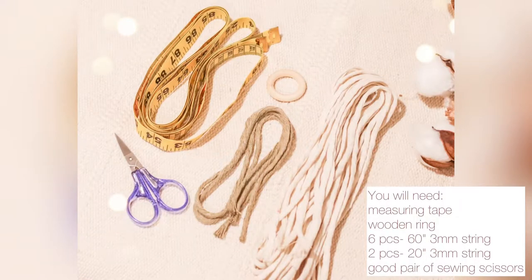In this video I will show you how to make a very simple plant hanger. You will need the following. This plant hanger is 24 to 25 inches long and the pot that I'm using is four and a half inches wide and five inches high.